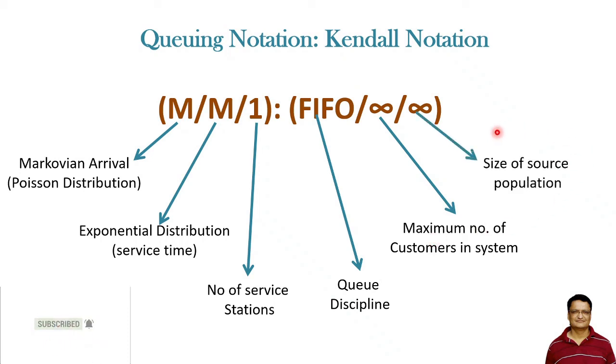And the last one is the size of the source population. Here you can see that the customers who are coming from a certain population is infinite.